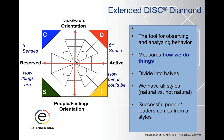Extended DISC — the way we like to present the diamond is we divide it into halves. If you look at the top half, you can see the D style and the C styles are representing the task or fact-oriented styles, versus the S's and I's on the bottom half, which represent the people and feelings half of the model. It doesn't mean that D's and C's won't focus on people and feelings and vice versa, but they prefer to focus on tasks and facts.